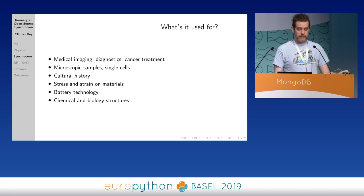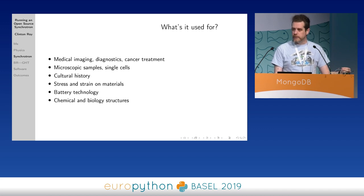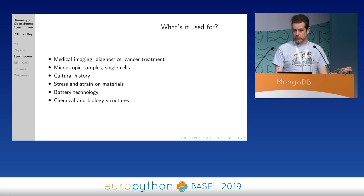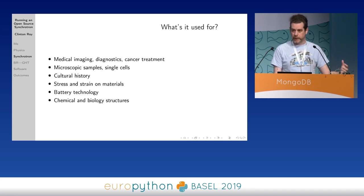There are a lot of uses for the synchrotron: medical, microscopic samples, looking at single cells and single molecules, and some cultural history stuff. We can also do interesting things to samples - put them under strain, pass radio waves and microwaves through them, heat them up. There's a lot of work on battery technology at the moment, and a lot of biology work. In interesting cases you can have a chemical reaction taking place and look at that chemical reaction as it's happening.